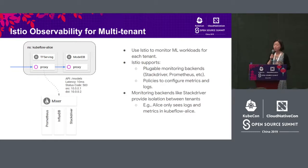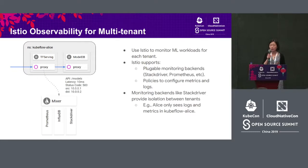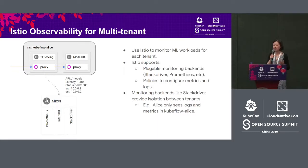You can use Istio to monitor machine learning workloads for each tenant. Istio allows you to plug in any monitoring backends such as Stackdriver or Prometheus, and you can define policies to configure what metrics and stats you would like to log. The monitoring backends like Stackdriver provide isolation between tenants — for example, you can specify an access control policy such that user Alice only sees logs and metrics in the Kubeflow-Alice namespace.